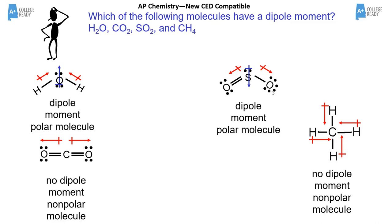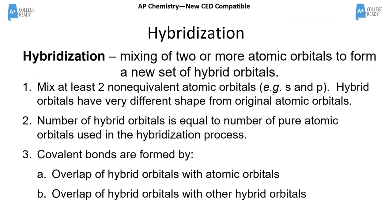After determining the Lewis structure, formal charge, geometry, and polarity, we can discuss hybridization. Hybridization is nothing more than how you make space for electrons to go. For a tetrahedral molecule, one atom in the center is connected to four other things.